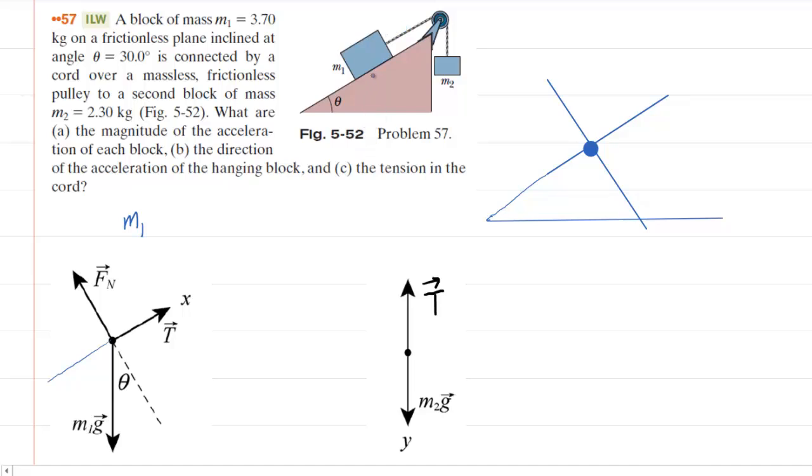Another force acting on M1 is the ramp surface pushing perpendicularly up on M1. This is known as a normal force, and we have indicated that force in our free body diagram as well. Finally, we have the gravitational force Mg pulling down on M1, so we've labeled that force as well.